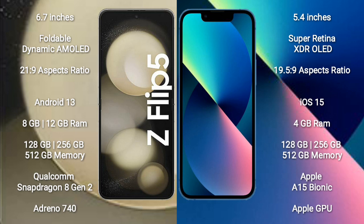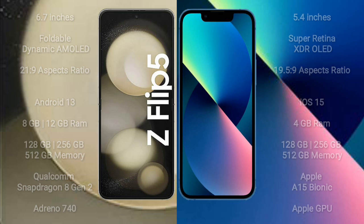Samsung Galaxy Z Flip 5 comes with 8GB or 12GB RAM and 128GB, 256GB, or 512GB internal storage, powered by a Qualcomm Snapdragon 8 Gen 2 processor and Adreno 750 GPU. iPhone 13 mini comes with 4GB RAM and 128GB, 256GB, or 512GB internal storage, powered by the Apple A15 Bionic processor and Apple GPU.